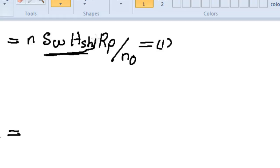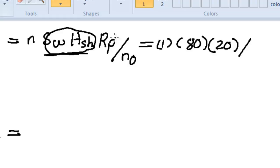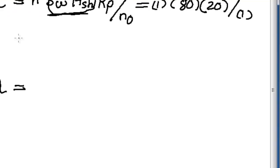In this example the operating hours are given directly as 80 hours per week, so we use SW × HS = 80 directly. The hourly production rate RP = 20 units per hour. With only one operation, from here we get PC = 1,600 units per week.